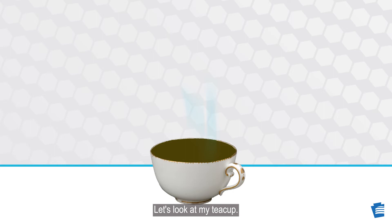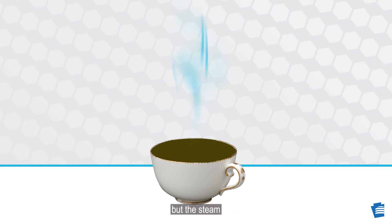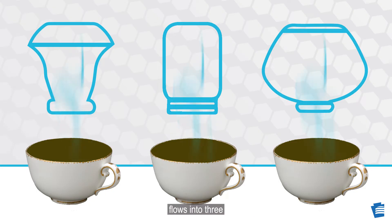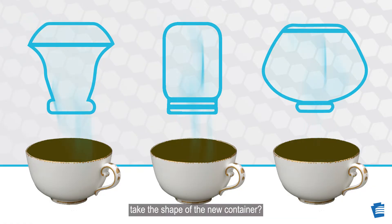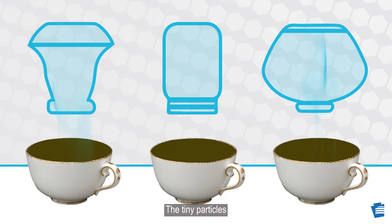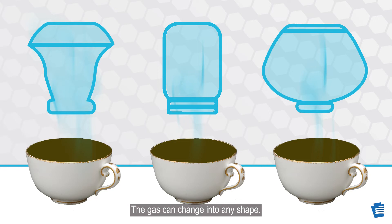Let's look at my teacup. It is solid matter, but the steam rising from the teacup is a gas. If the steam from my three identical cups of tea flows into three different shaped containers, does the steam take the shape of the new container? Yes. Gases change their shape. The tiny particles just shift their positions within the shape of the container. The gas can change into any shape.